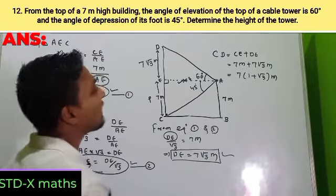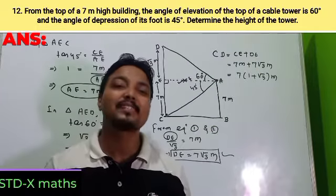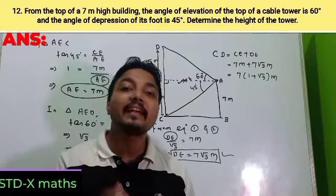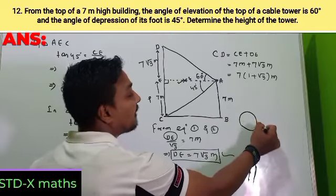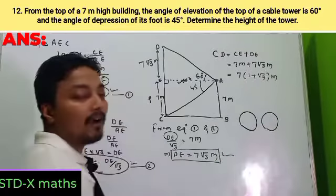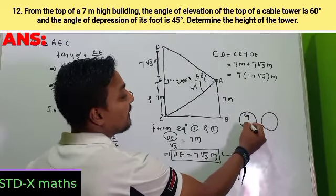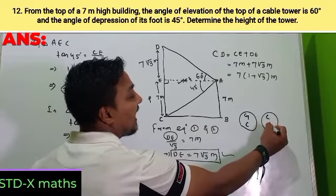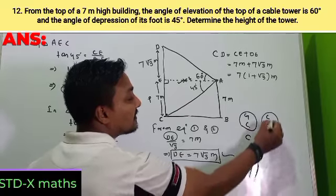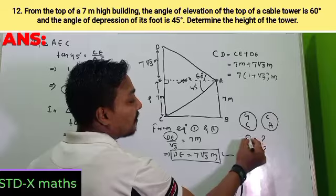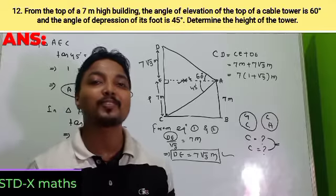In triangle AED: tan 60° = DE/AE → √3 = DE/AE → AE = DE/√3. This is equation 2. From equations 1 and 2: DE/√3 = 7, so DE = 7√3 meters.